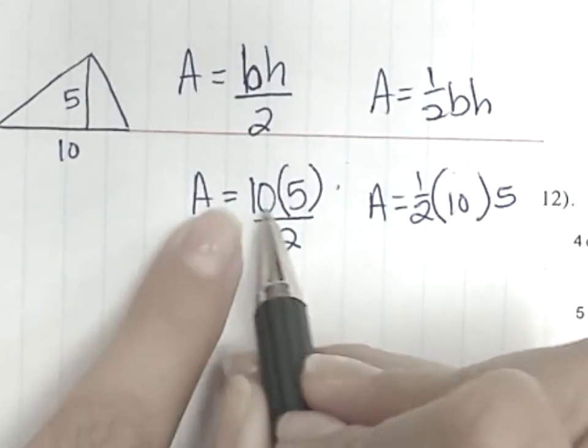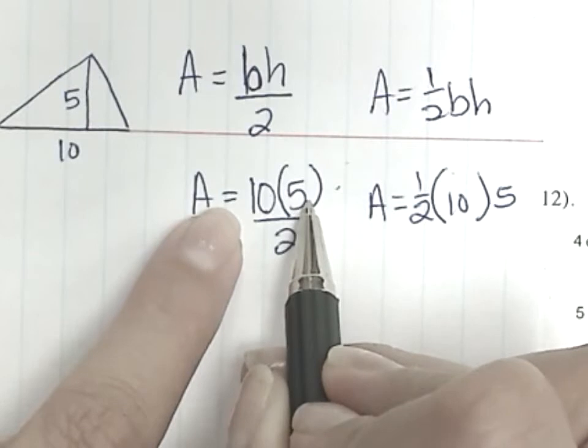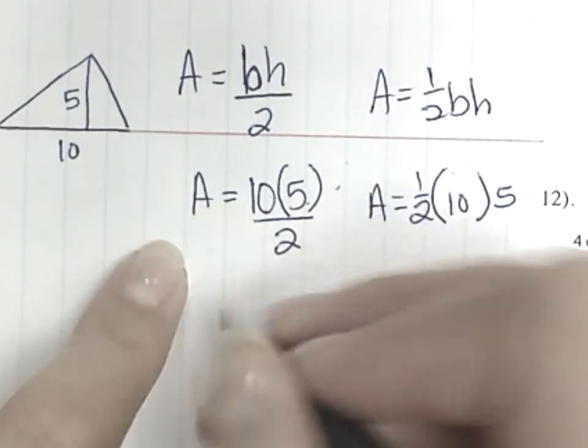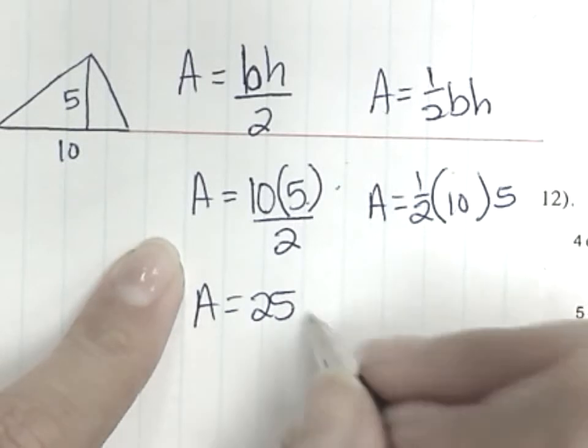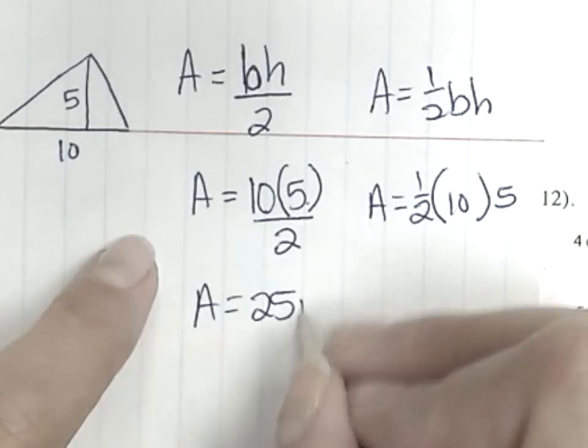In this first one we multiply ten times five which is? Fifty. What's half of fifty? Twenty-five. Twenty-five and my units are? Meters squared.